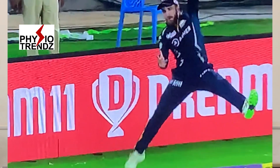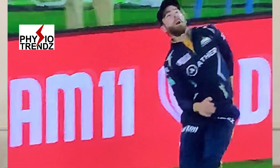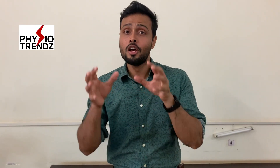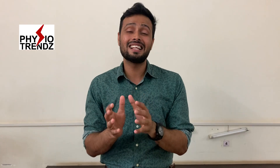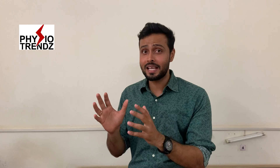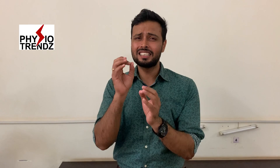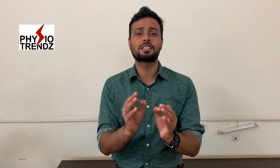We can see that Kane Williamson was trying to stop a six hit by Ruturaj Gaikwad, and at that time he falls down on his right foot and some injury happens. So what exactly happened there — what is the mechanism of injury, and on the basis of that, how can we suspect what injury occurred?